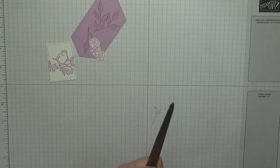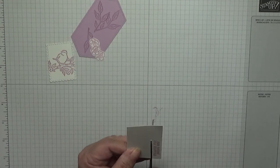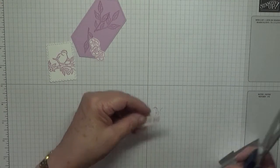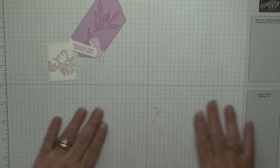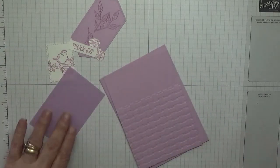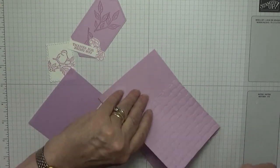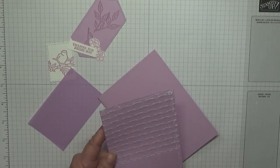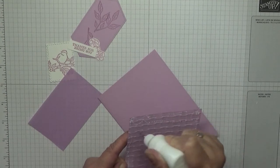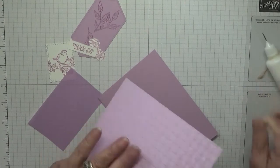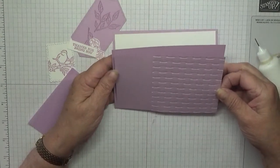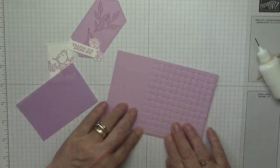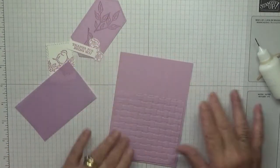The sentiment you have to cut. Now all we've got to do is put this together. Let's get extra glue there, as it is an embossed part.